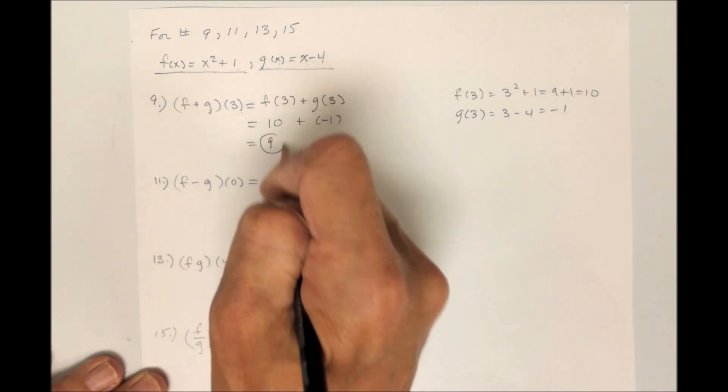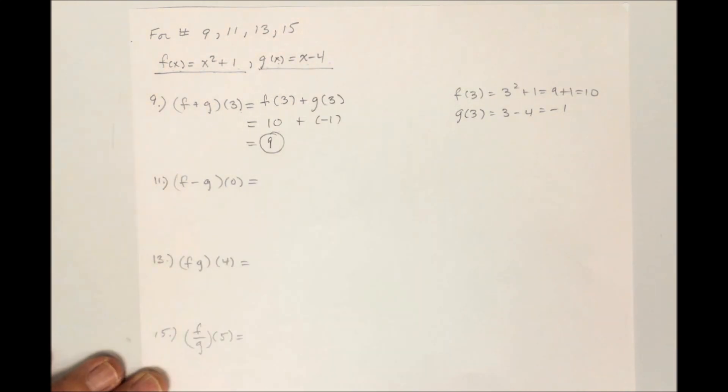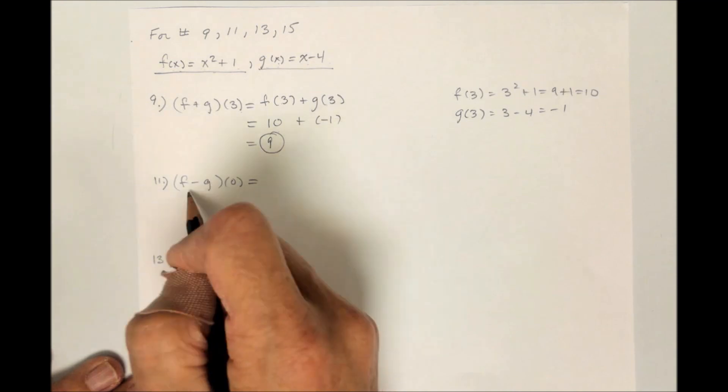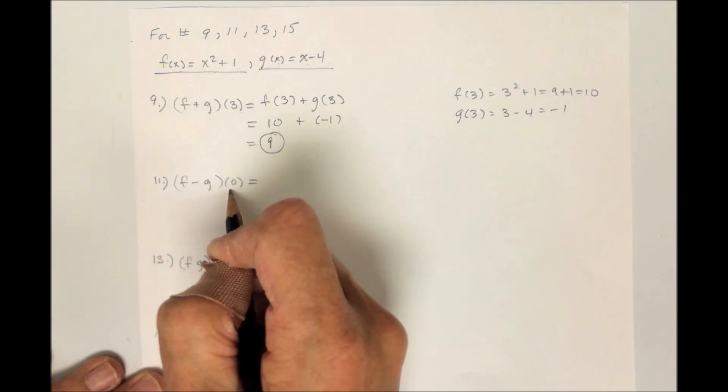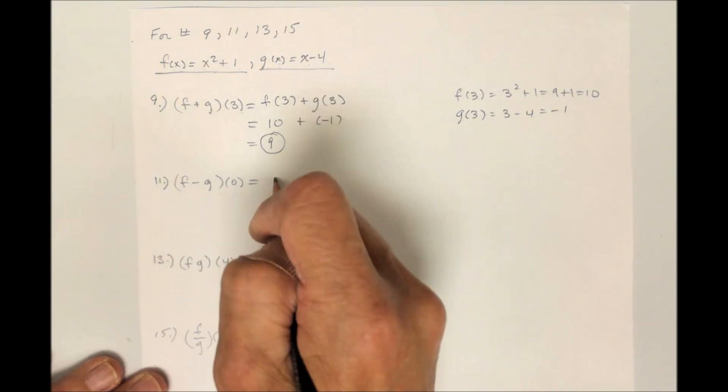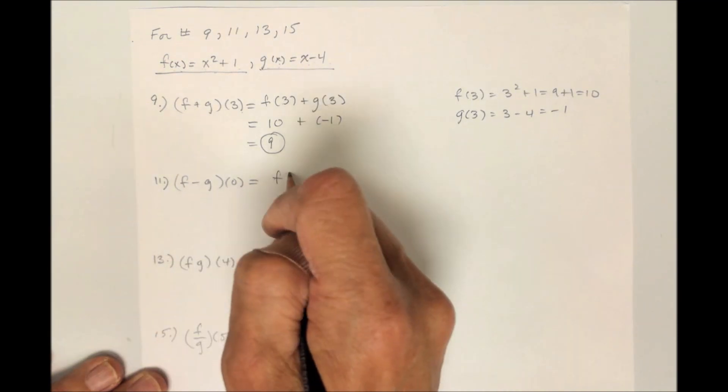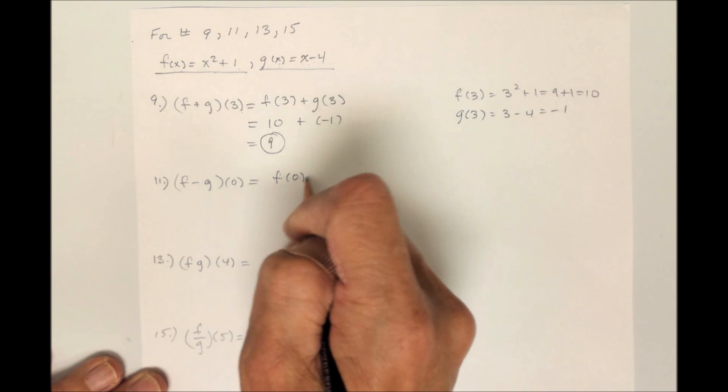So I have 10 plus negative 1, which is 9 — and there's your answer. The next one says f minus g of 0. F minus g of 0 would be f of 0 minus g of 0.